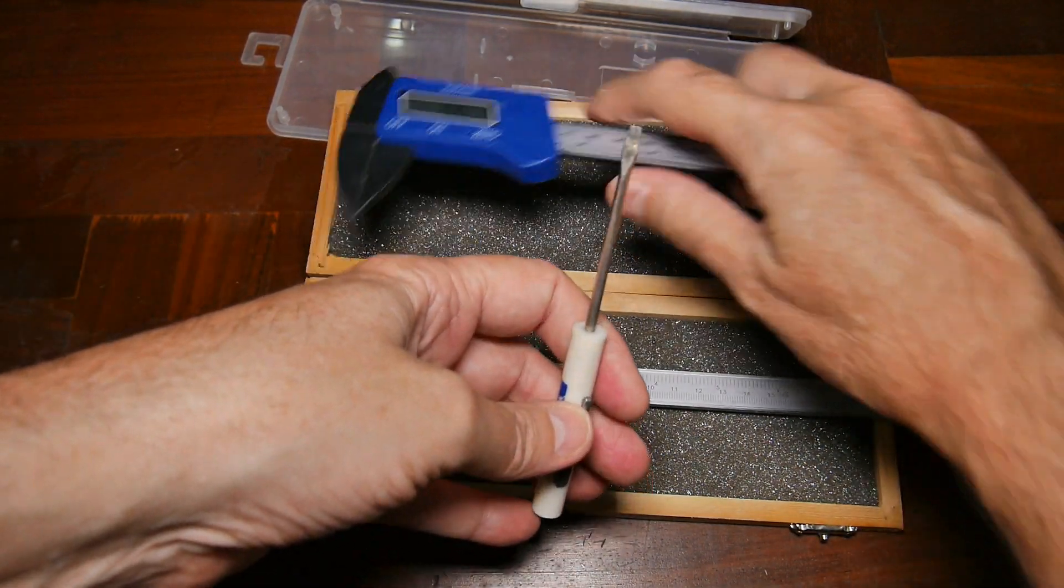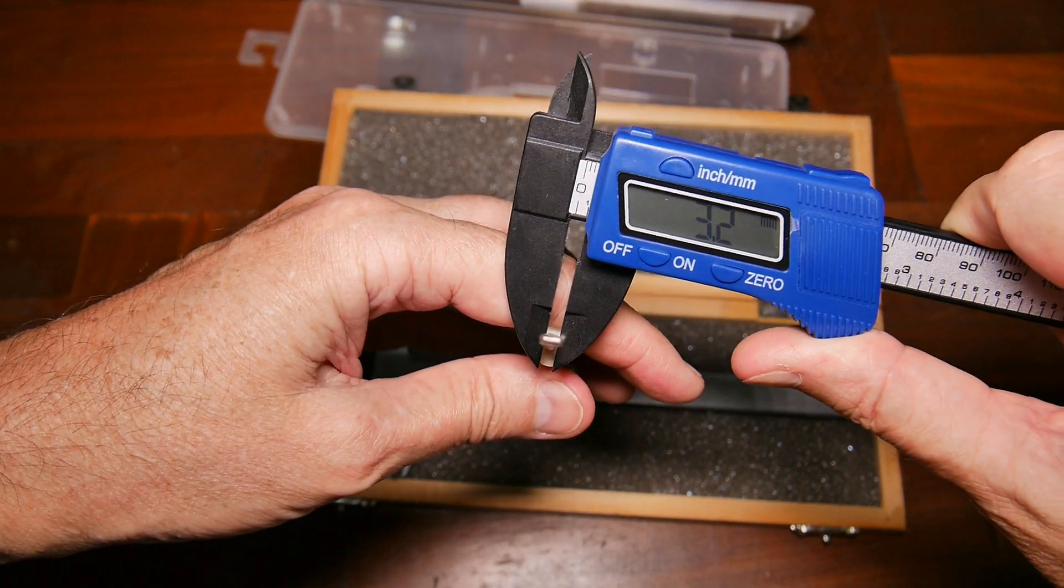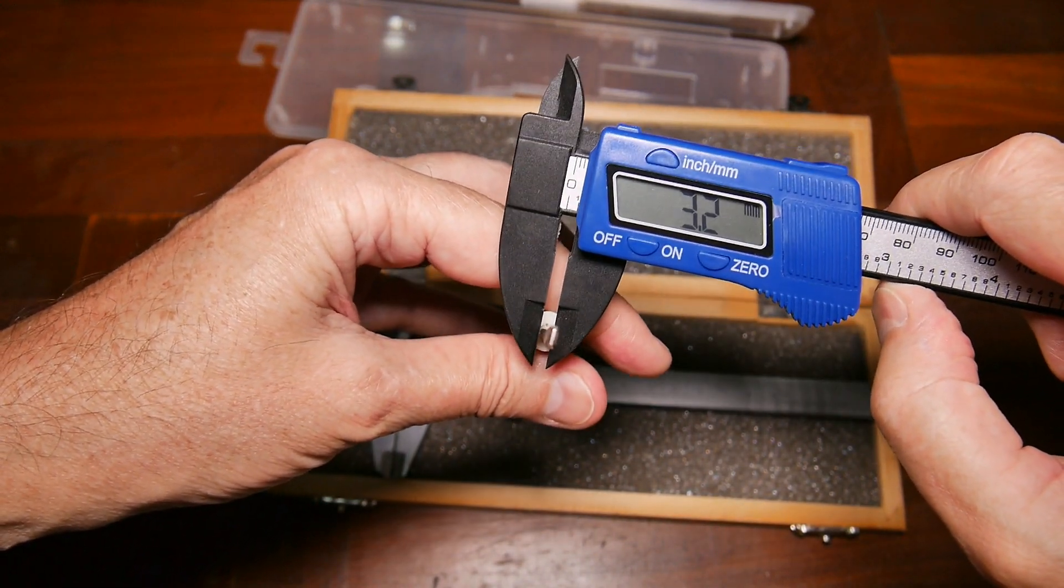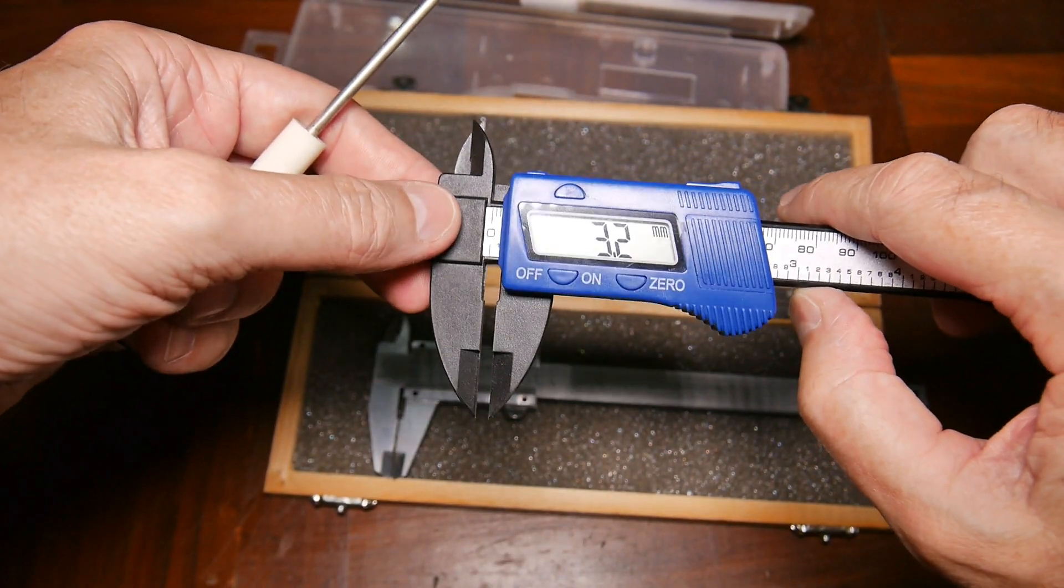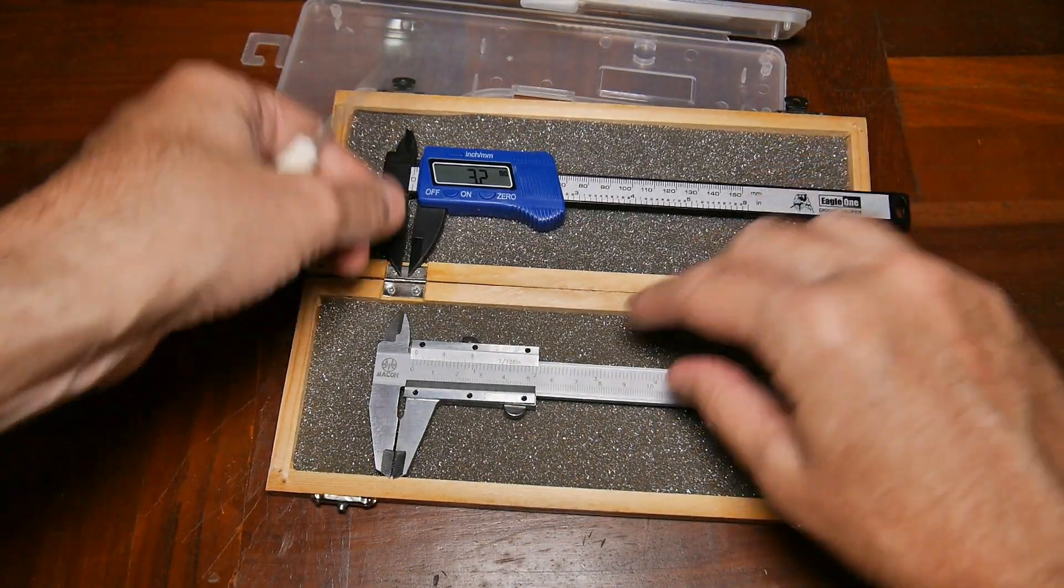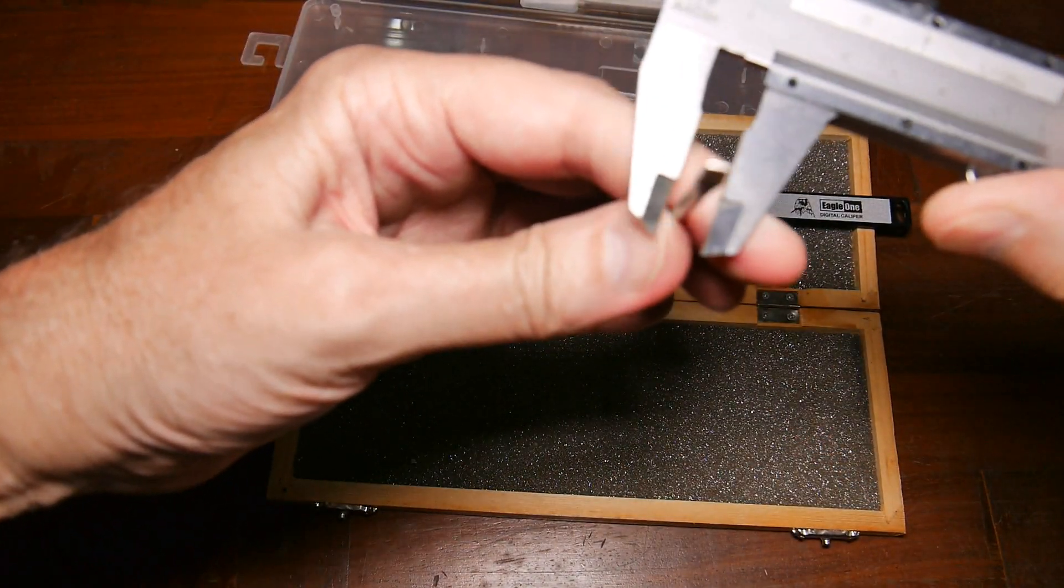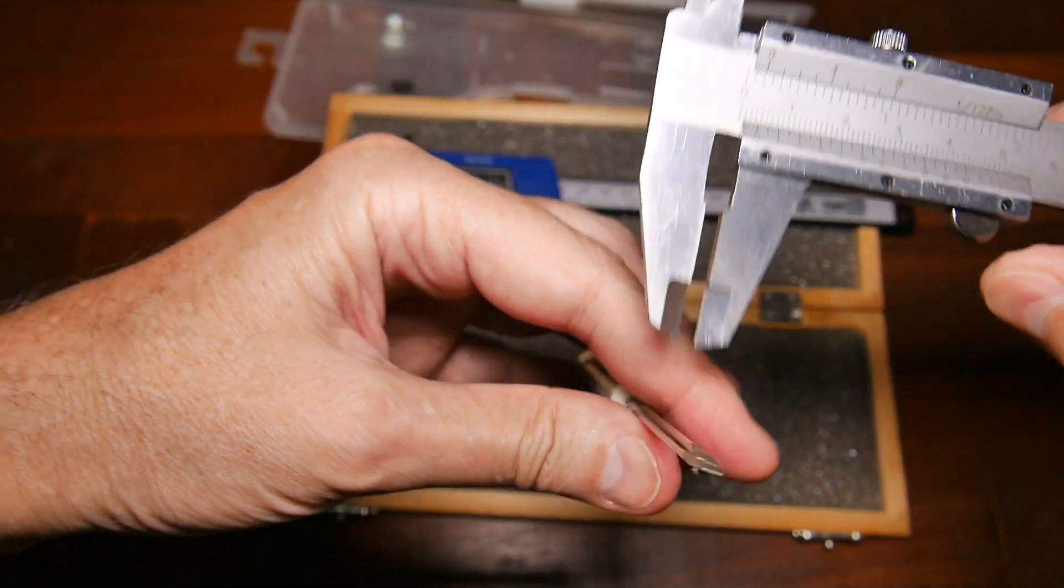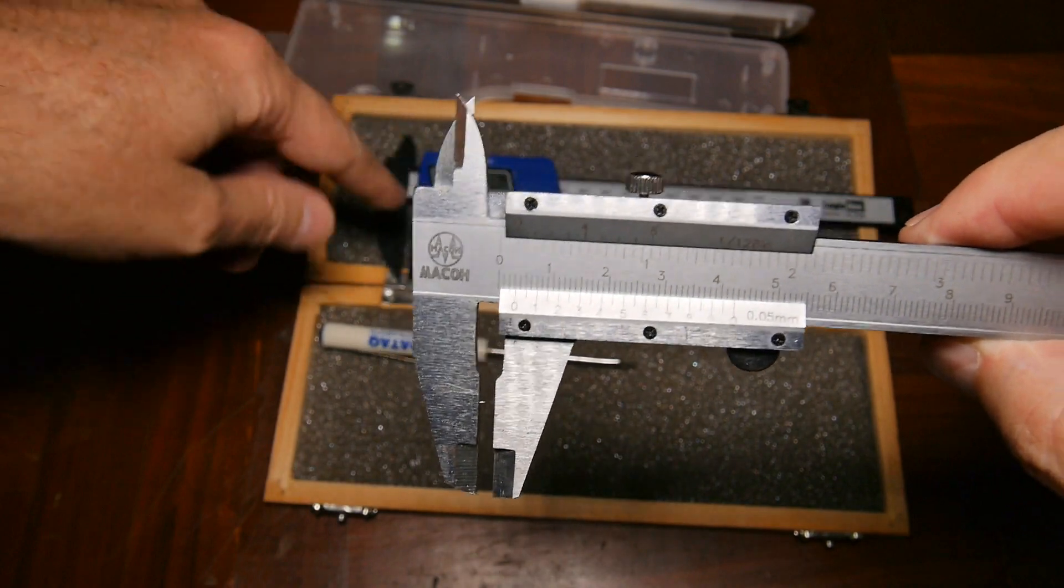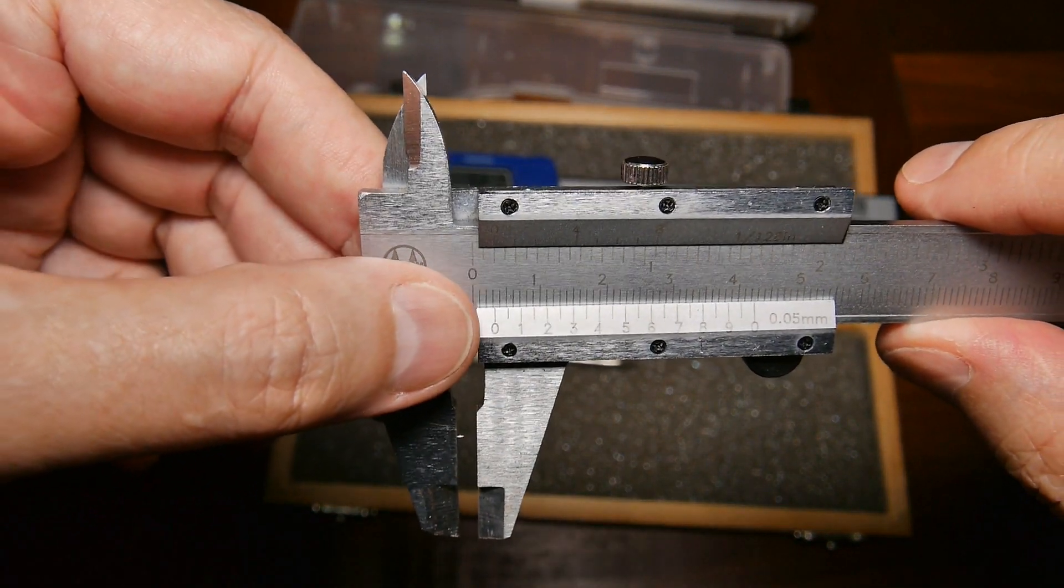Okay, well let's measure something and take a look and see how well it works. We'll start off by measuring this screwdriver and call it 3.2 millimeters. Let's look at the vernier. Let's see if I can get a close-up on this.